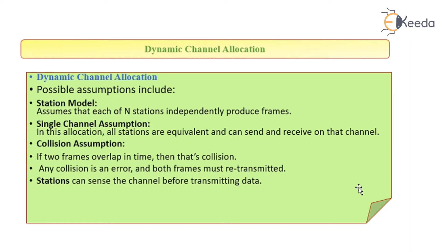Dynamic channel allocation: the possible assumptions are as follows. Station model — it assumes that each of n stations independently produces frames. Single channel assumption — in this allocation, all stations are equivalent and can send and receive on that particular channel.